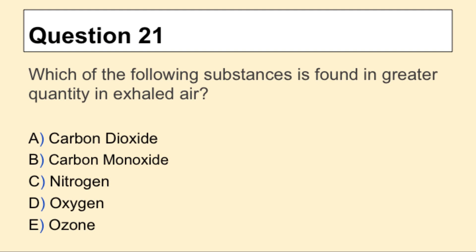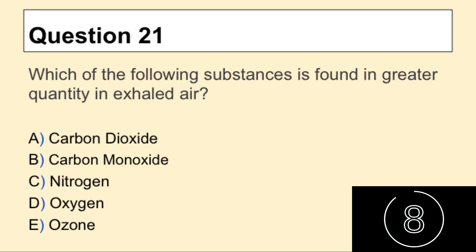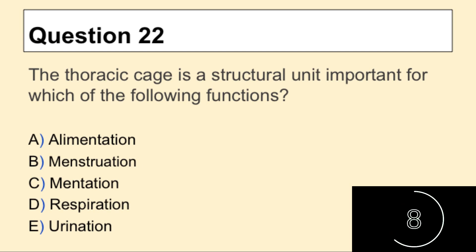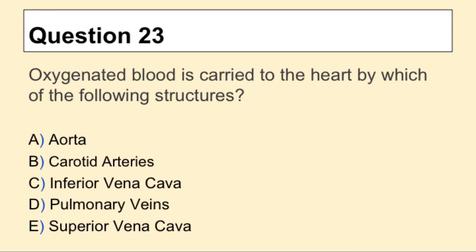Question 21: Which of the following substances is found in greater quantity in exhaled air? Question 22: The thoracic cage is a structural unit important for which of the following functions? Question 23: Oxygenated blood is carried to the heart by which of the following structures?